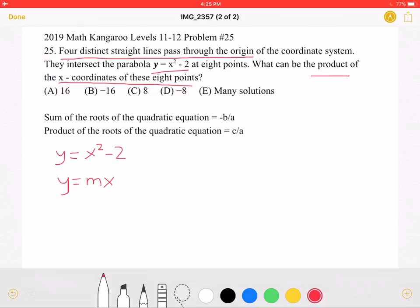So in order to see where these two graphs intersect each other, we set them equal to each other. So x squared minus 2 would be equal to mx, meaning that x squared minus mx minus 2 would be equal to 0.